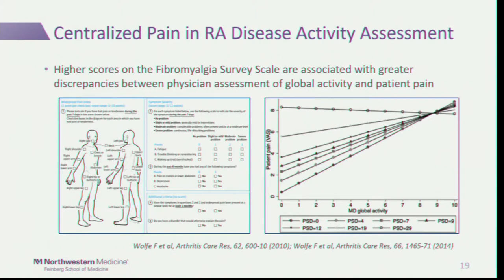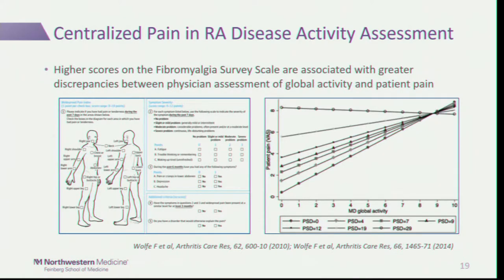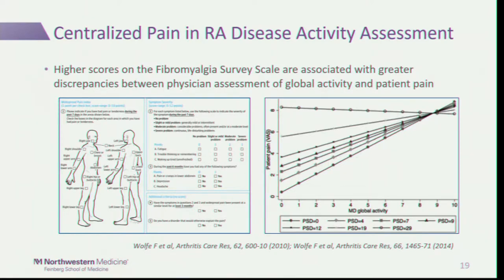A study using the fibromyalgia survey scale (also called the polysymptomatic distress score, or PSD) graphed physician-assessed global disease activity on the X axis versus patient-reported pain on the Y axis. Patients with low PSD scores showed a good correlation between physician and patient assessments, whereas patients with high PSD scores—those with high centralized pain—showed virtually no correlation between their pain levels and physician-assessed global disease activity.